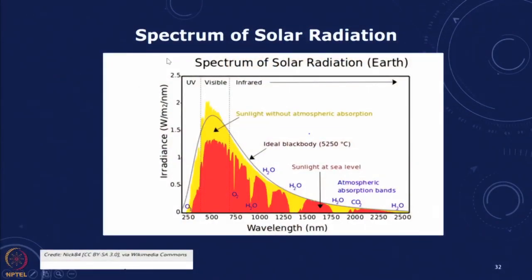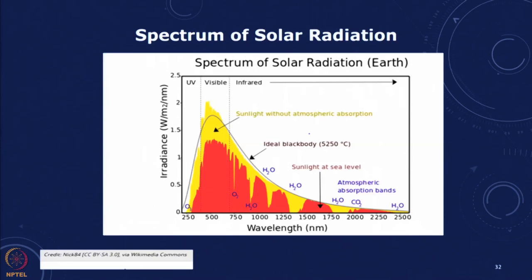When we look at the spectrum of solar radiation, the sunlight at different wavelengths — some is absorbed and some reaches us. Some is in the visible range, some in the infrared and in the ultraviolet, and all of this is incident onto the device. Depending on the characteristics of the device, we have an efficiency which converts the energy.